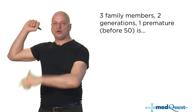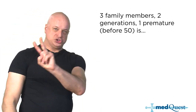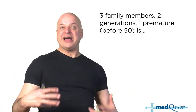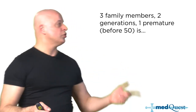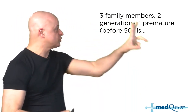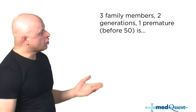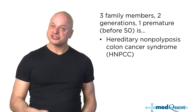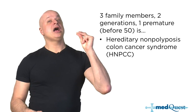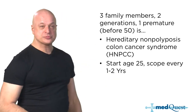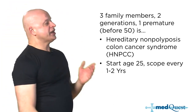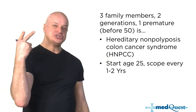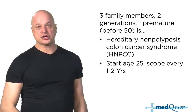Three family members, two generations, one premature — that's hereditary non-polyposis colon cancer, also known as Lynch syndrome. Lynch syndrome involves autosomal dominant genetics, and you start screening at age 25 and repeat every one to two years.